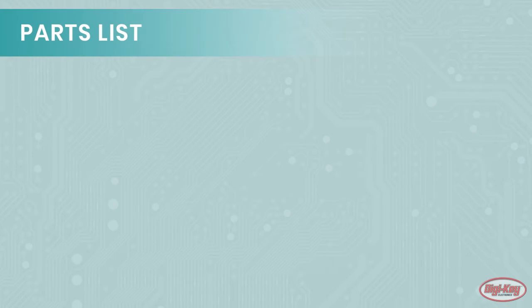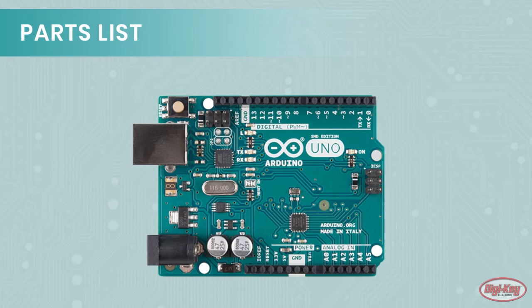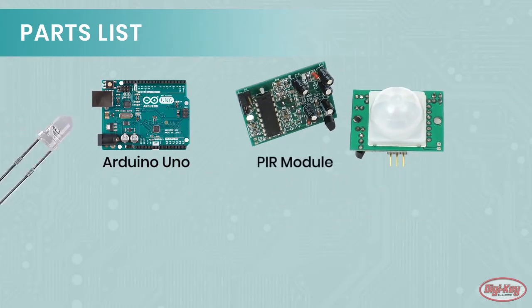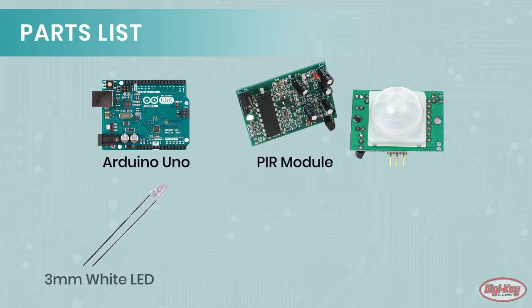For this project, you'll need the following: an Arduino Uno, a PIR module, a 3 mm white LED, a 680 ohm resistor, and a breadboard.